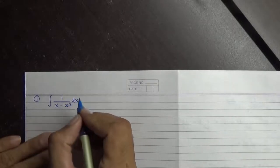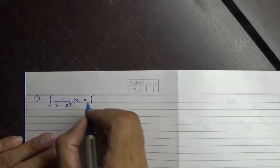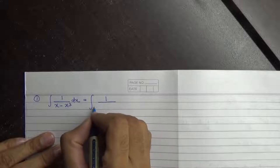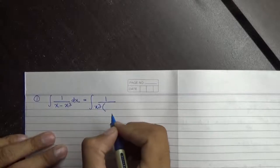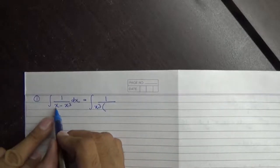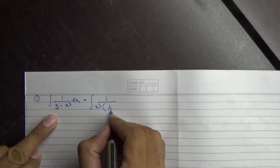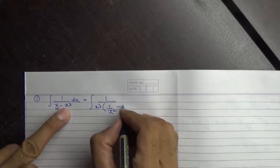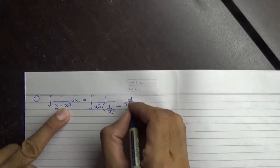Let us start the miscellaneous exercise of integration. First question: integration of 1/(x - x³) dx. हम इसे integrate करना है। denominator से x³ common ले लीजिए। अगर यहाँ से x³ common लेते हैं, यहाँ पर अकेला x है, तो बाकी क्या बचेगा: 1/(x² - x³) यहाँ से common ले चुके हैं, so 1, into dx।